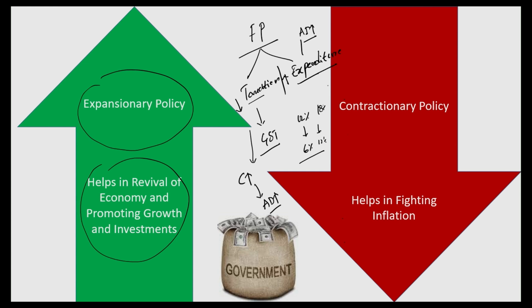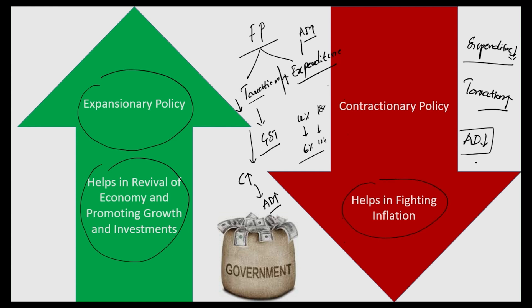If the government does exactly the opposite — reducing expenditure and increasing tax rates to mobilize higher revenue — that would result in a fall in overall aggregate demand in the economy. Such actions help in decreasing demand, and when demand decreases, further rises in prices can be controlled. This is how contractionary fiscal policy helps in fighting inflation.